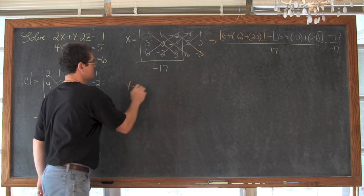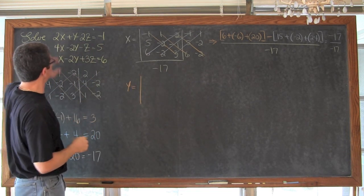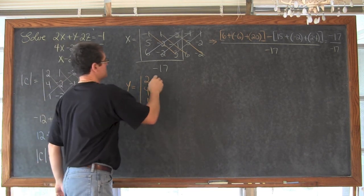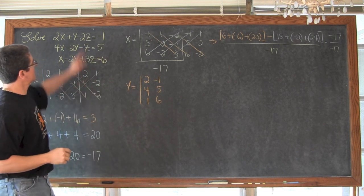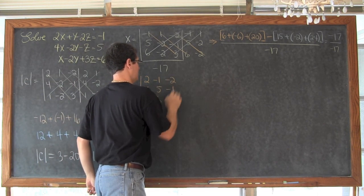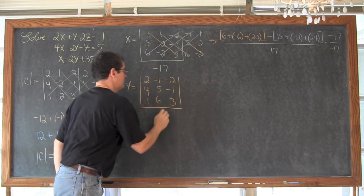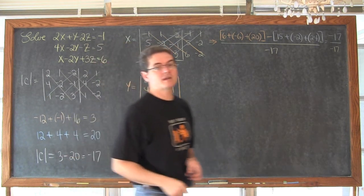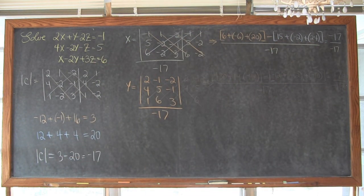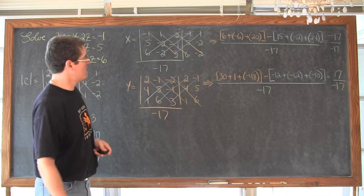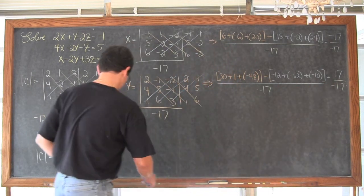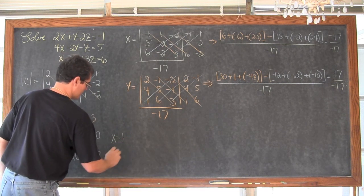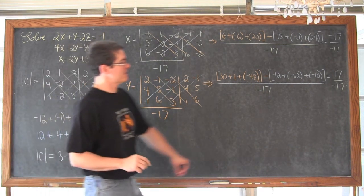So y is going to be: put the coefficients of x back in — 2, 4, and 1 — put those constants in for the y column, replacing the coefficients of y with negative 1, 5, and 6, then go back to negative 2, negative 1, and 3 in the third column. That is again over negative 17. We get a y value equal to negative 1, because we have 17 divided by negative 17.